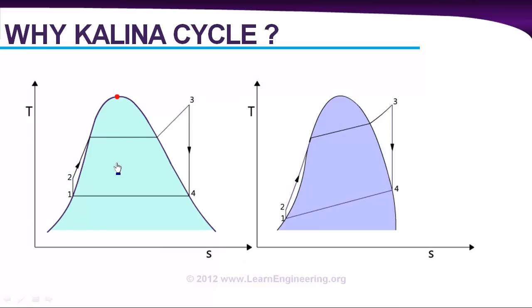In a Rankine cycle during phase transformation temperature doesn't change, it remains the same. You can say during heat addition process 2 to 3, temperature doesn't increase during phase transformation. Similarly again in the condenser, process 4 to 1, the temperature doesn't change due to phase change.